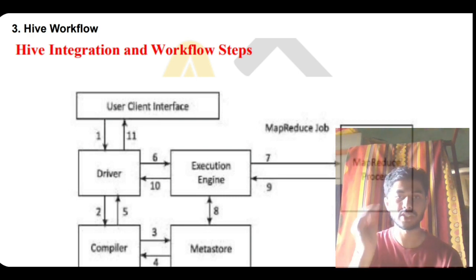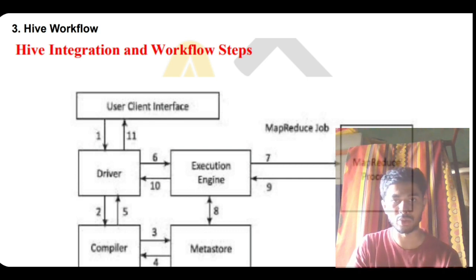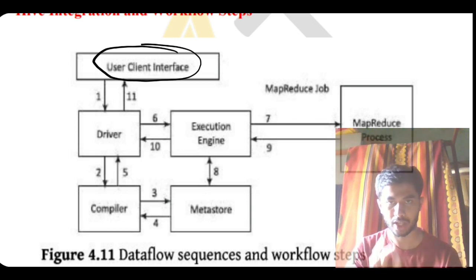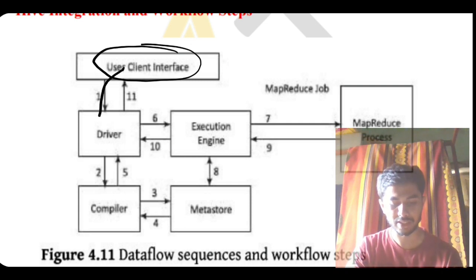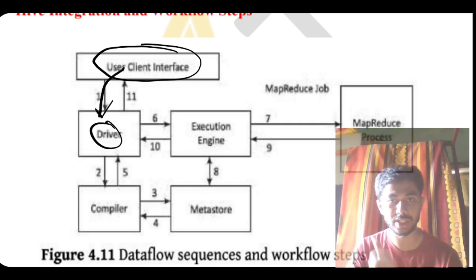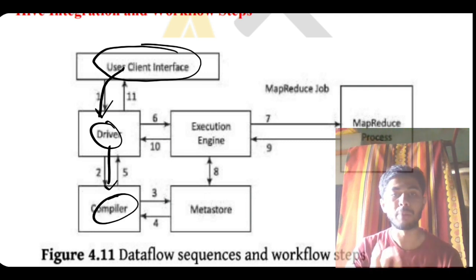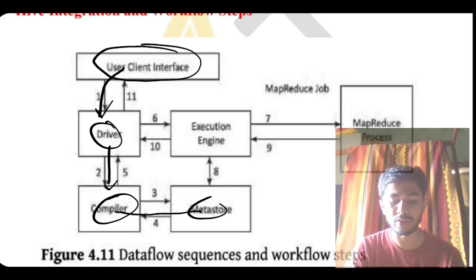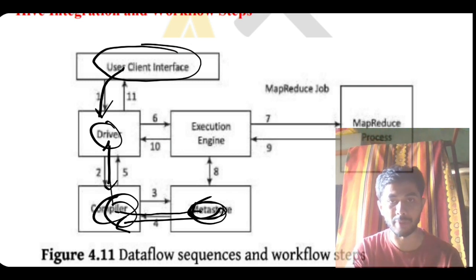Next we have the Hive workflow. Hive sends a request, processes it, fetches data, and sends the answer back to the user. A user sends a request to Hive and it goes through the driver. The driver processes the detail and checks if the query is correct; if so, it forwards to the compiler. The compiler does compilation and syntax checking, then parsing — to understand what kind of data is needed. For metastore data it passes to the metastore, which fetches the metadata and sends it back to the compiler for verification, then back to the driver.